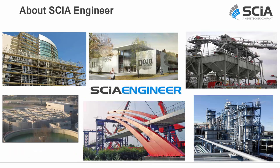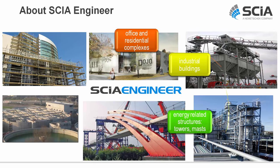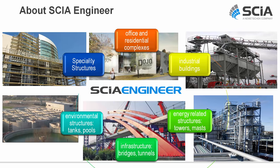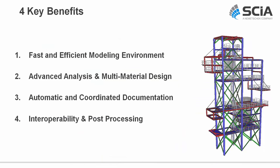SIA Engineer can be used for all types of structures: offices and residential complexes, industrial buildings, energy-related structures such as towers or masts, infrastructure like bridges and tunnels, environmental structures like tanks and poles, and special structures like scaffolds. Today we focus on industrial structures. We describe SIA Engineer's four key benefits: fast and efficient modeling environment, advanced analysis and multi-material design, automatic and coordinated documentation, and interoperability and post-processing.